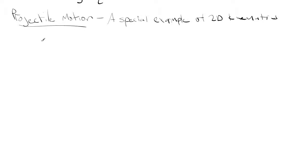I've written up here: projectile motion. Projectile motion is what we're going to get into next, and a lot of chapter 4 is dedicated to it. All projectile motion is is a special example of 2D kinematics, and that's why we spend a lot of time on it — because it's a good example of the stuff we've been learning.